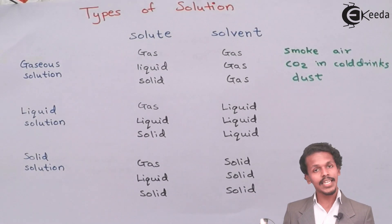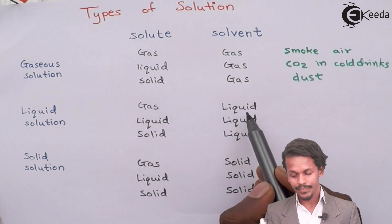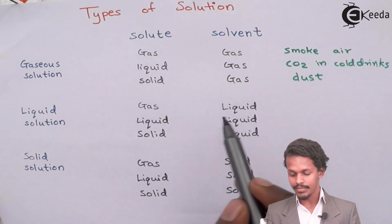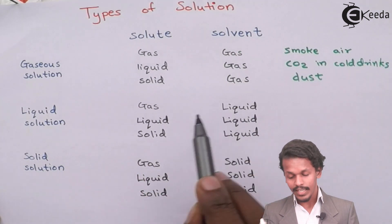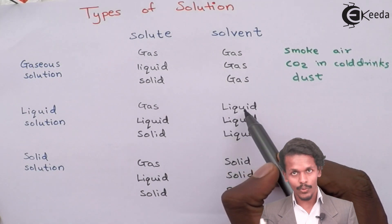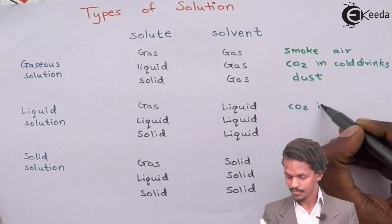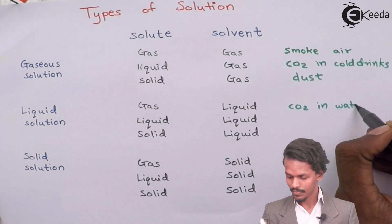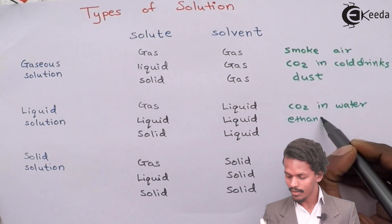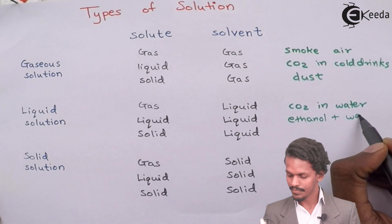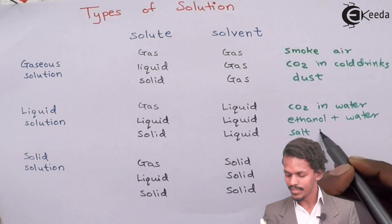Moving to liquid solutions: gas in liquid is exemplified by carbon dioxide dissolved in liquid water. Liquid in liquid is exemplified by ethanol mixed with water. Solid in liquid is exemplified by salt dissolved in water.